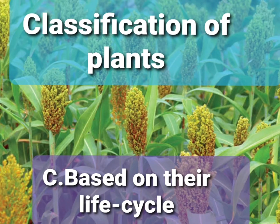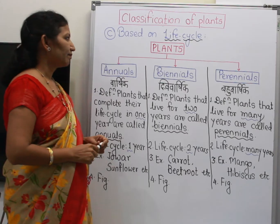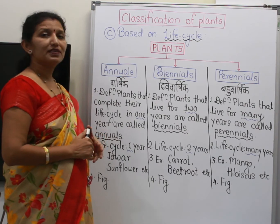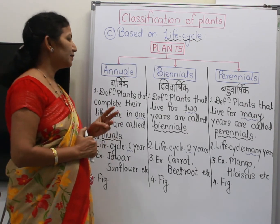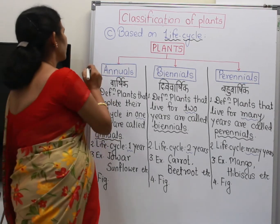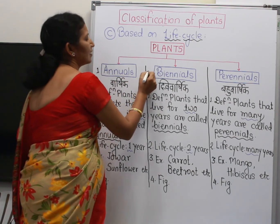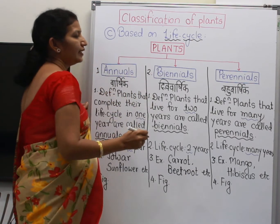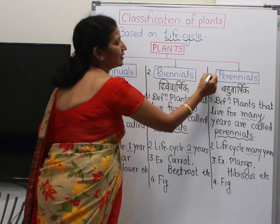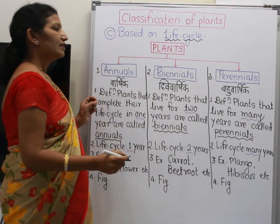Now, we will study the third type of classification of plants, that is based on their life cycle. Based on life cycle, they are classified into three types: the first one is annuals, second is biennials, and third one is perennials.